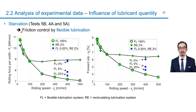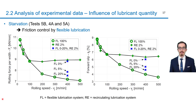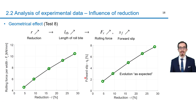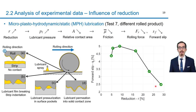Friction control by flexible lubrication is based on starvation. As shown in this figure, friction and thus the rolling force and forward slip are controlled by the oil concentration in the emulsion — if concentration increases, the rolling force and forward slip are reduced. An additional influence is the reduction. The rolling force and forward slip represented as a function of reduction both increase, which can be explained by the changing geometry in the roll bite, among other effects. The forward slip was expected to increase due to more severe friction conditions at higher reductions, but it might also decrease, which can be explained by MPH lubrication.